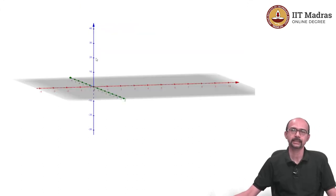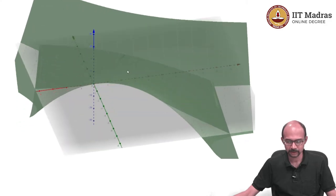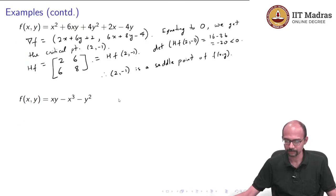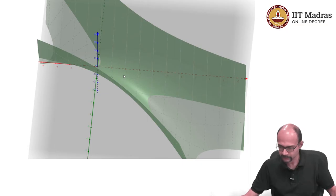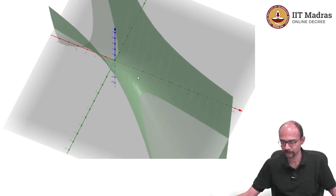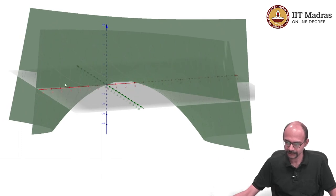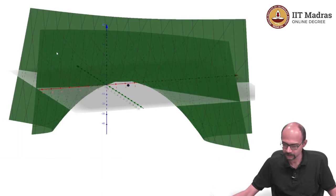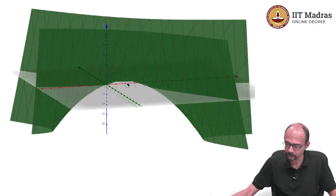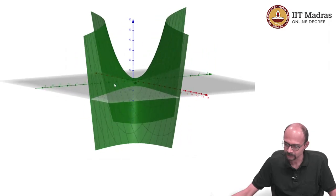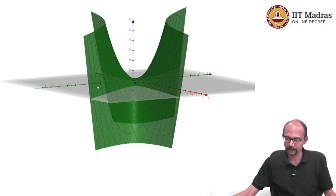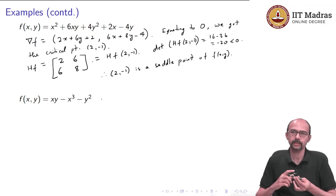Let us view this function in GeoGebra and check what is happening at (2, −1). Here is the function f(x,y) = x² + 6xy + 4y² + 2x − 4y. You can see there is something interesting going on. If we look at the point (2, −1), you can see right above it there is a saddle shape — and indeed we are able to detect that using the Hessian matrix.